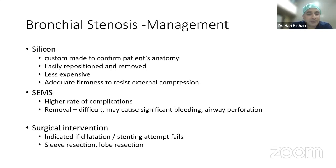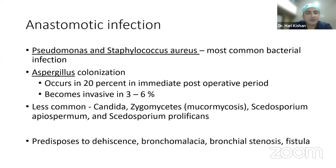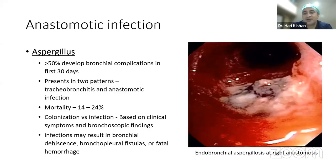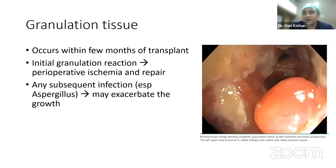When stents fail, especially with large areas of dehiscence, patients may need to be referred for re-surgical procedures or re-transplantation. For infectious complications, monitoring via frequent bronchoscopies helps identify aspergillus or mucormycosis, and early antifungal treatment is beneficial. Granulation tissue management in transplant patients follows the same principles as in normal airways.